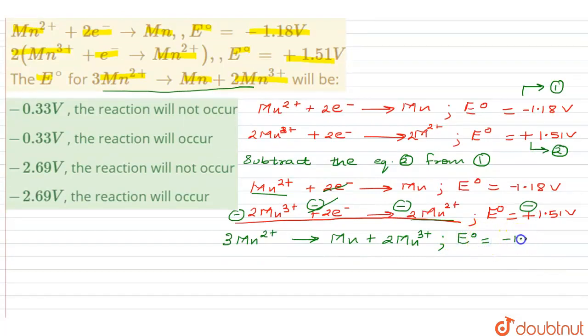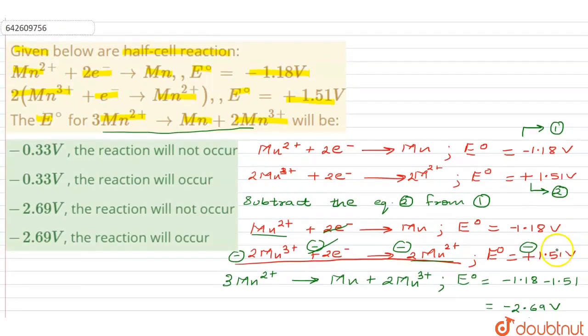So E⁰ will be equal to minus 1.18 minus 1.51 and that gives me the value as, oh sorry, this is going to be minus 2.69 volts. Now, since E⁰ is a negative value which we have obtained over here, obviously it indicates a non-spontaneous reaction. In short, the reaction will not occur. So minus 2.69 volts and the reaction will not occur reflects in our option number 3.